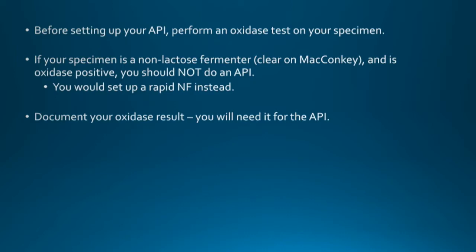Before you set up your API, you want to do an oxidase test on your specimen because you're going to need it for the final calculations. If your specimen is a non-lactose fermenter — meaning it's clear on MacConkey and is oxidase-positive — don't do an API. It won't help you. About half of the reactions are sugars, and if you have a non-fermenter, those sugars will make absolutely no difference and will all be non-reactive. Use a rapid NF or some other comparable test if you have a non-fermenter that's oxidase-positive.